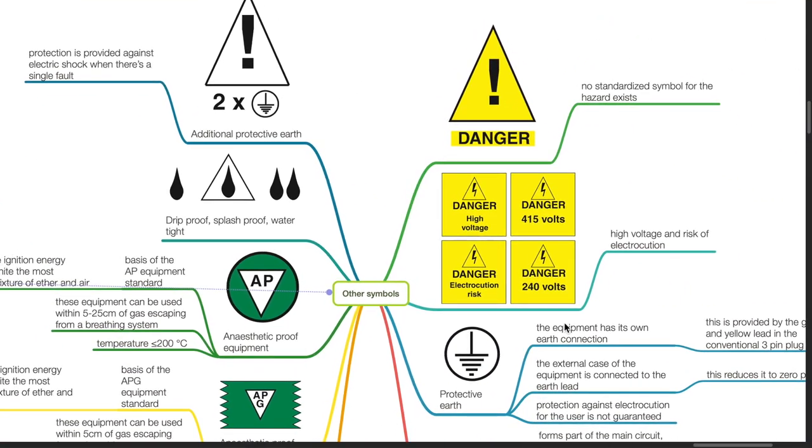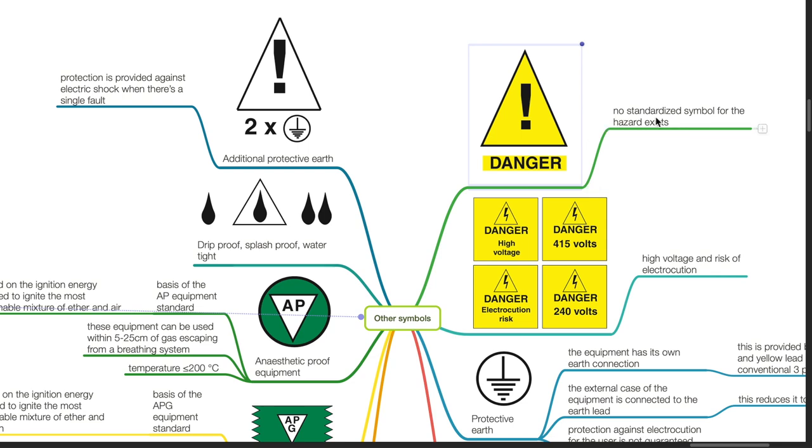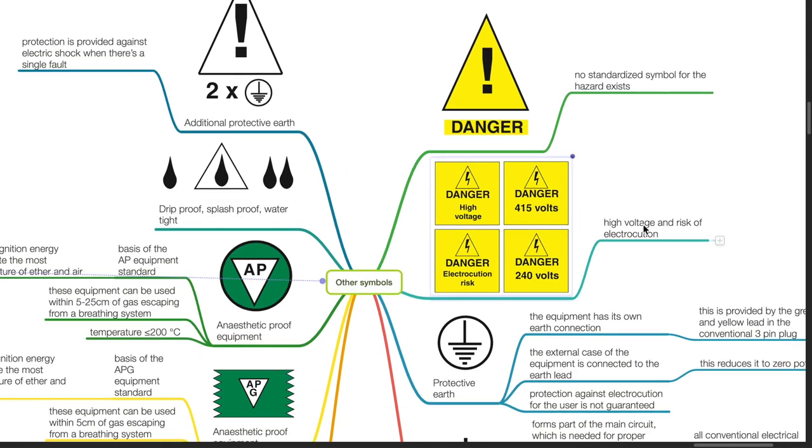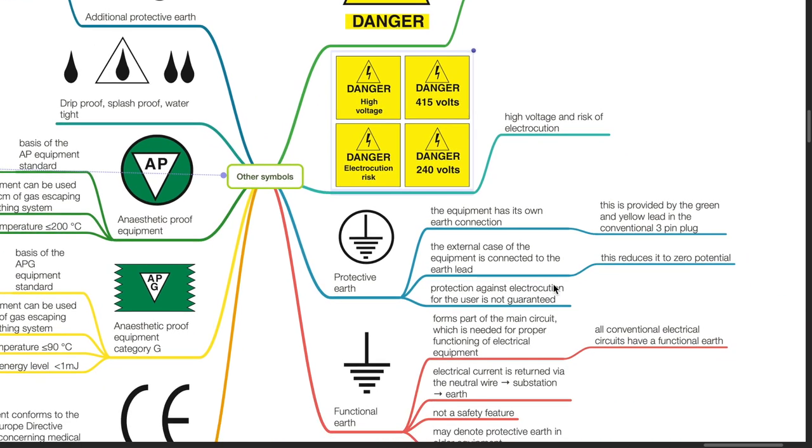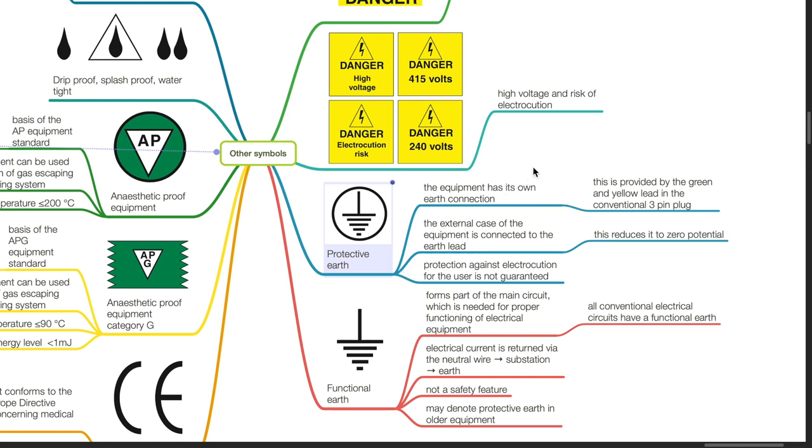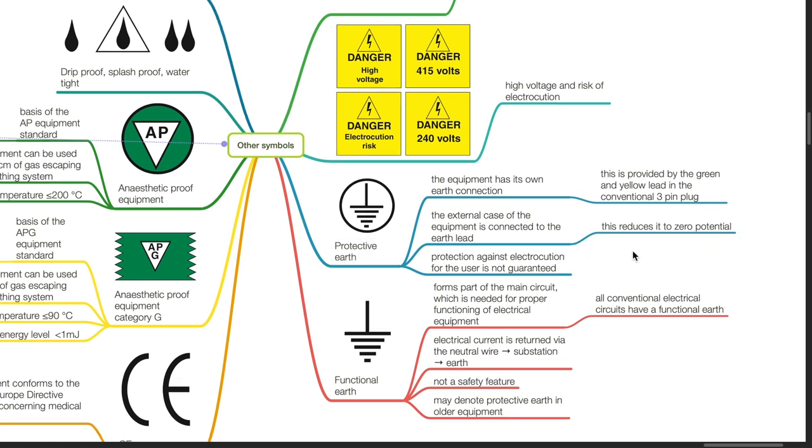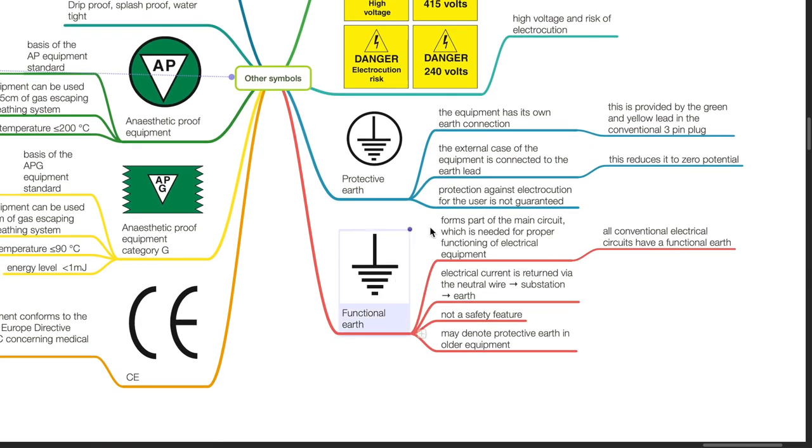These are other important symbols. The danger symbol has no standardized symbol for the hazard. High voltage and risk of electrocution symbol. The protective earth symbol indicates the equipment has its own earth connection, provided by the green and yellow lead in a conventional 3-pin plug. The external case is connected to the earth lead and reduces its potential to zero. Protection against electrocution for the user is not guaranteed. The functional earth symbol forms part of the main circuit needed for proper functioning of electrical equipment.